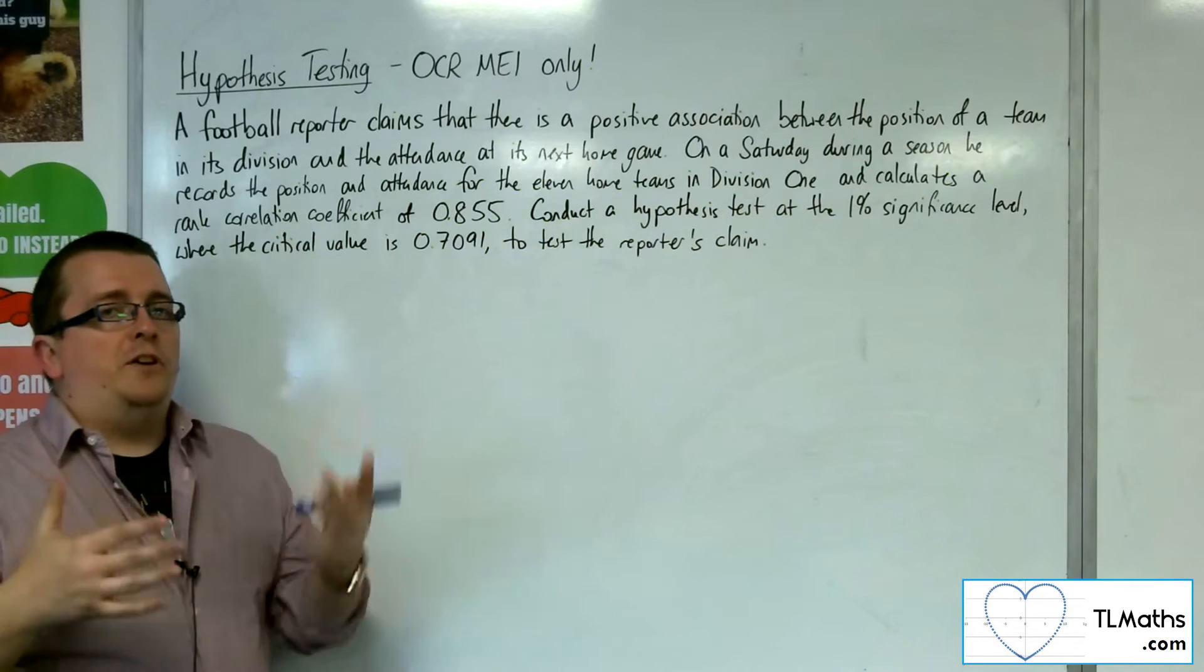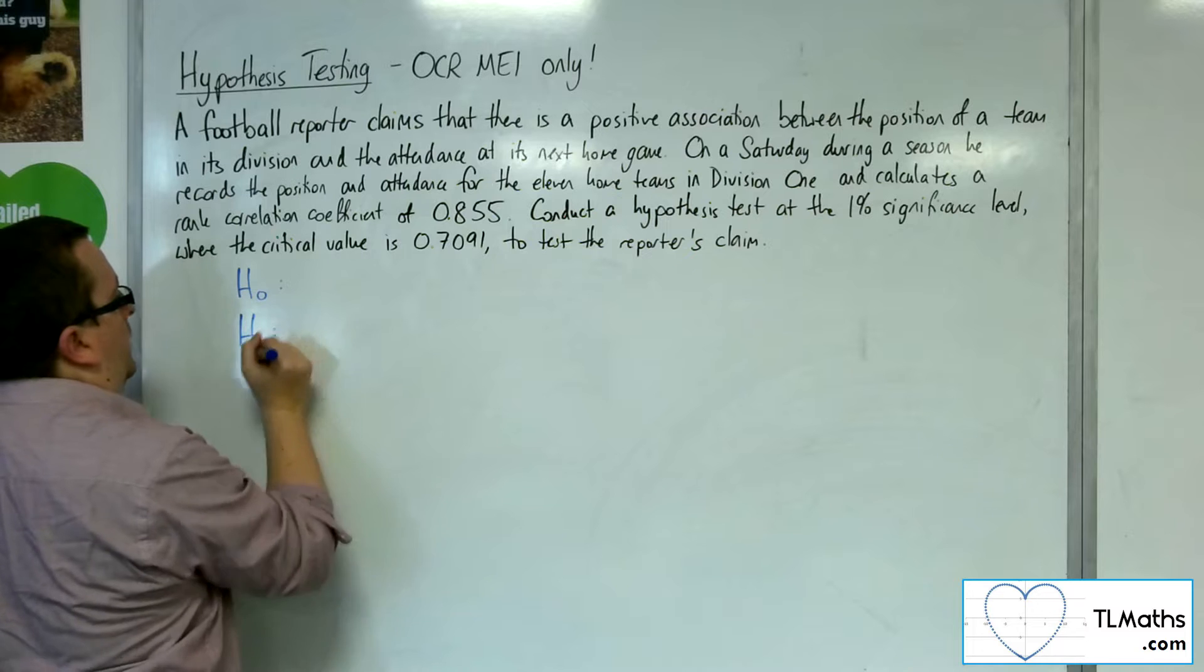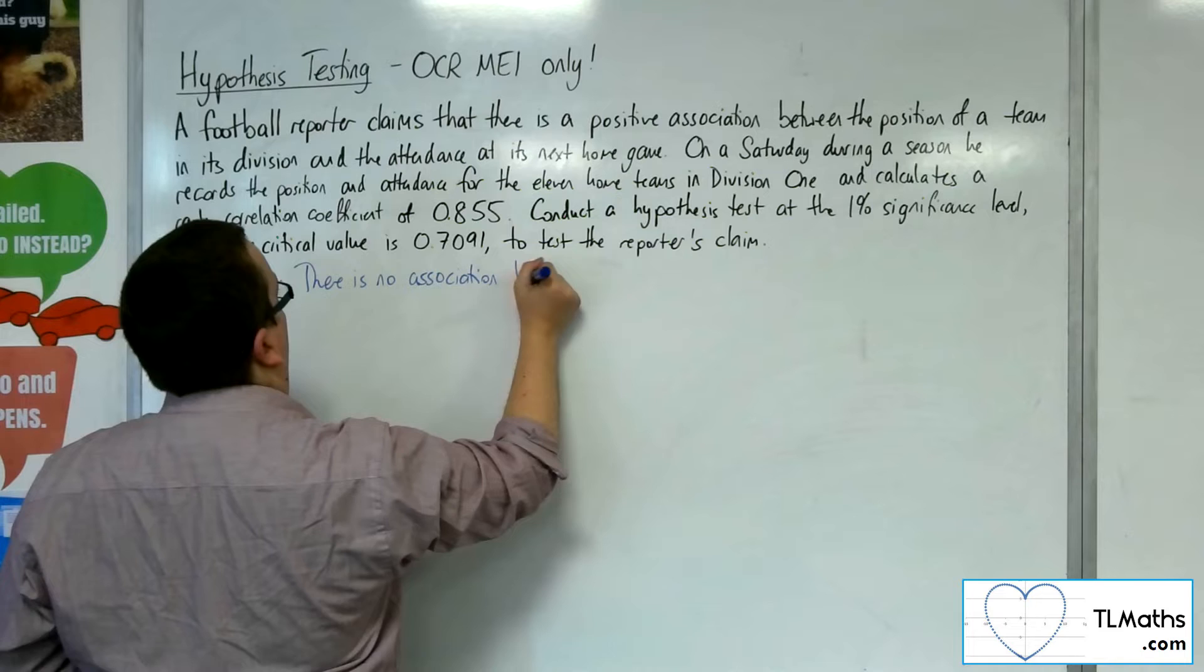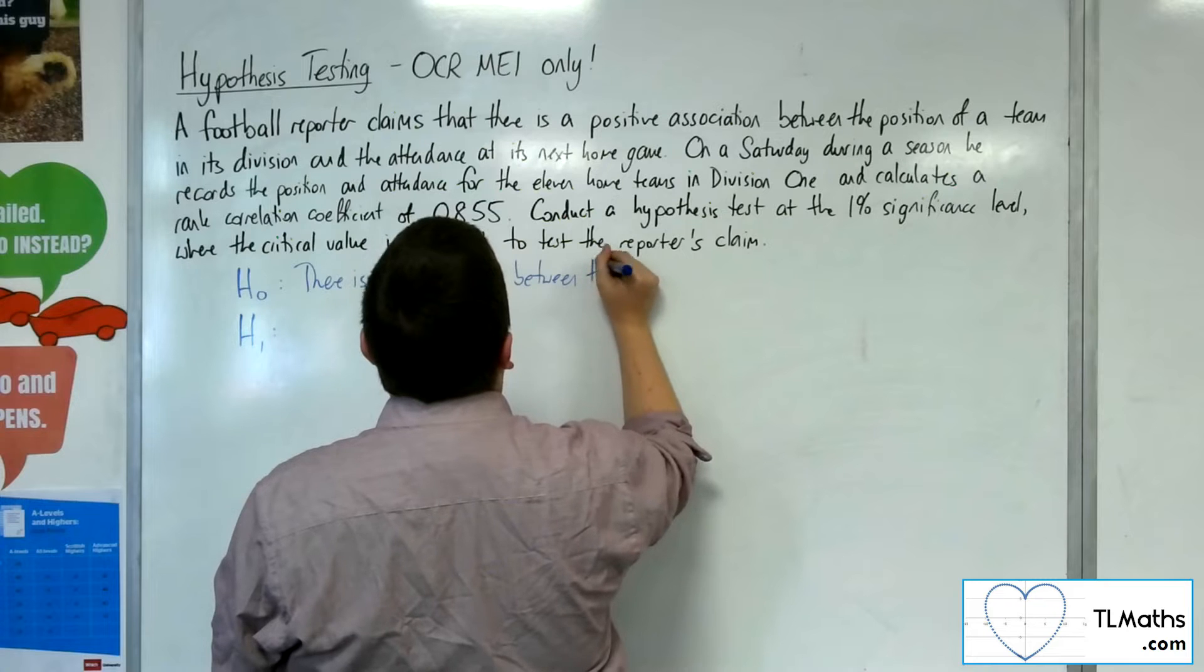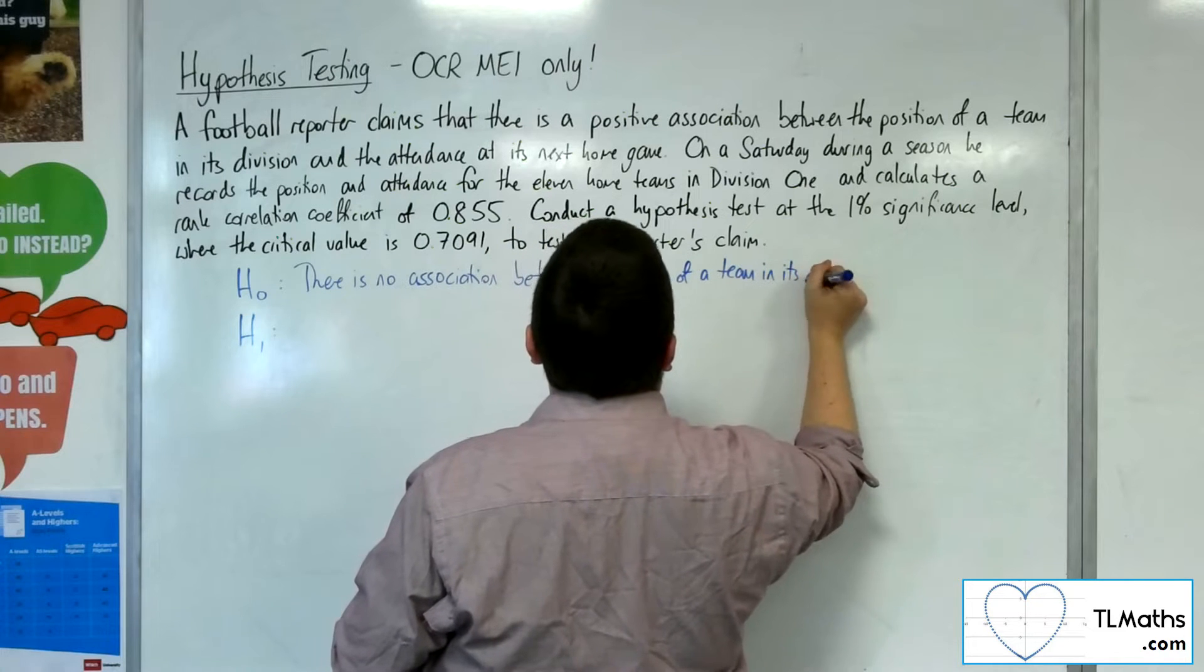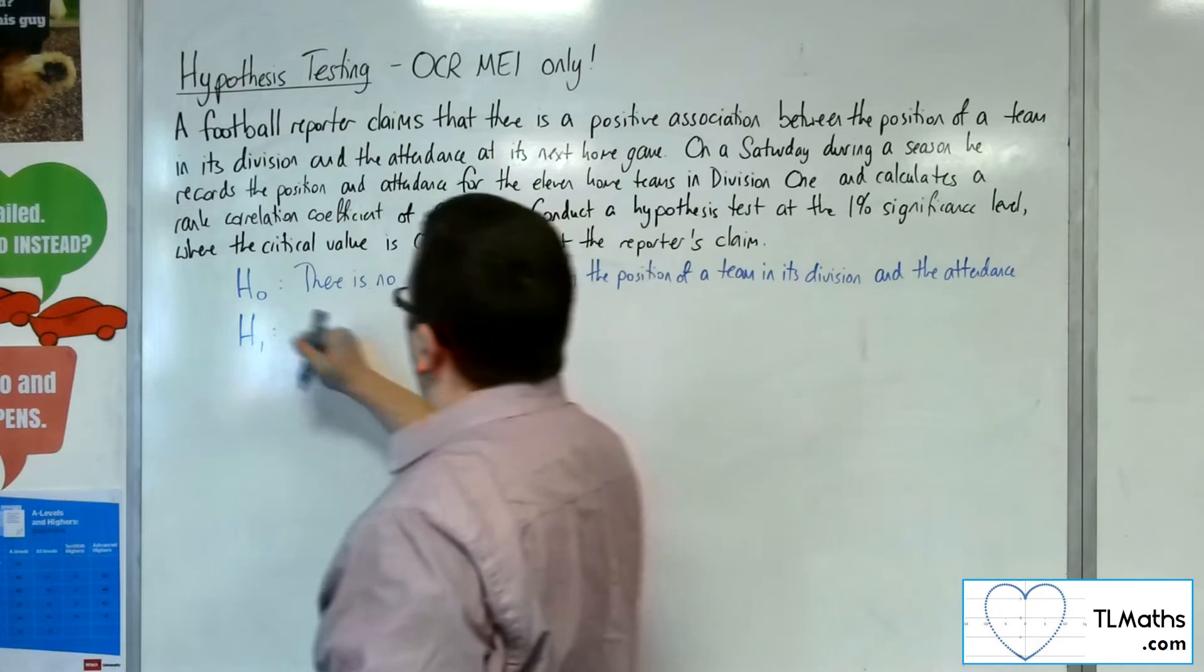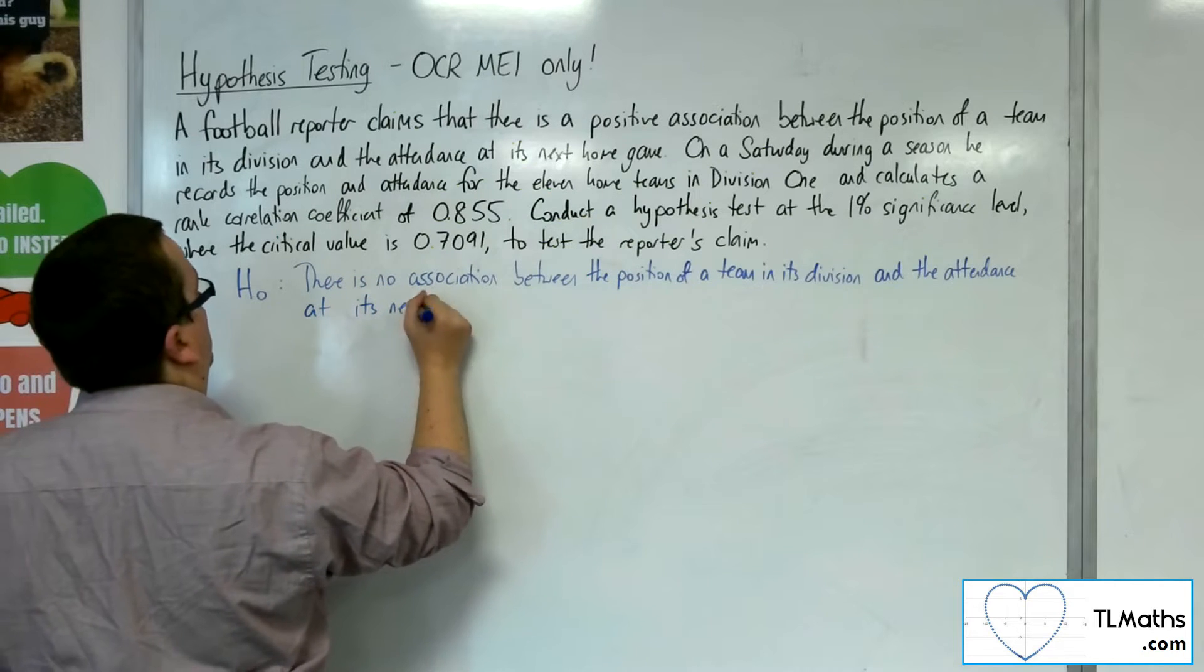We don't start off with an initial sentence. We go straight in with a null and alternative hypotheses. H0 says there is no association between the position of a team in its division and the attendance at its next home game.